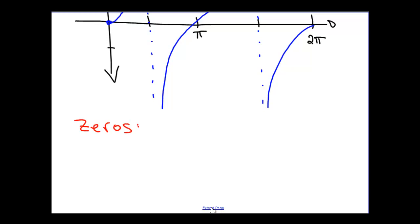Tangent has zeros at every integer number of π. At zero, at one π, two π, three π, four π. This is the same as sine, which we would expect because tangent is just the ratio of sine over cosine.